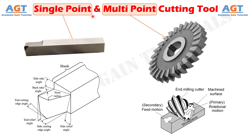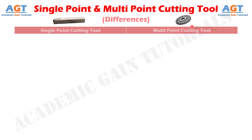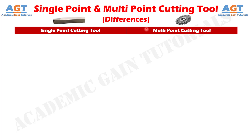As the name suggests, a single point cutting tool contains only one main cutting edge, while a multi point cutting tool contains more than two main cutting edges. Let's look into the basic differences between single point and multi point cutting tool in a tabular form.